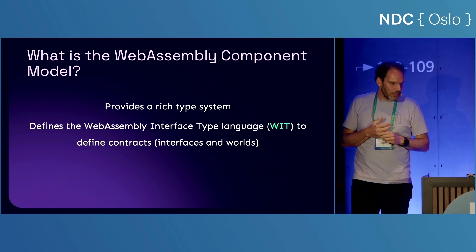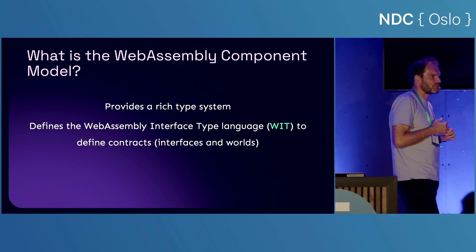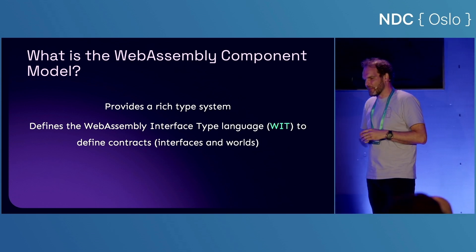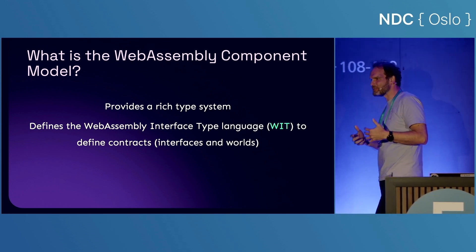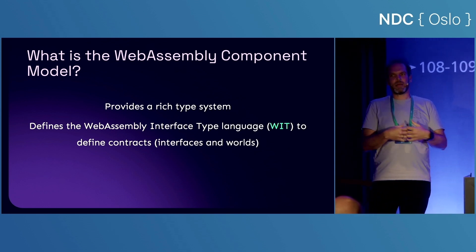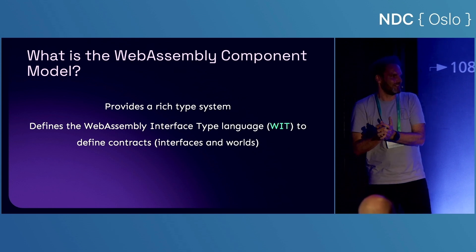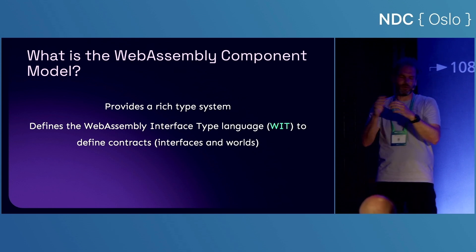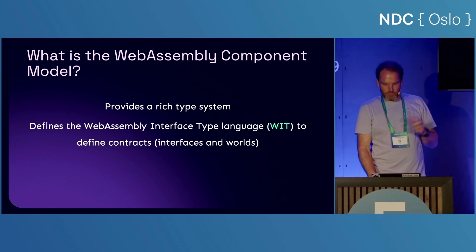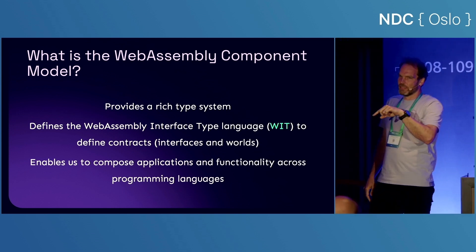Part of the component model is its own interface type language called WIT. In WIT, you define interfaces and create worlds of interfaces. The notion of worlds is important — what you describe with a world in WIT is the WebAssembly component's environment. The world has a set of interfaces that may be imported or exported, describing everything that WebAssembly needs in order to be able to run.